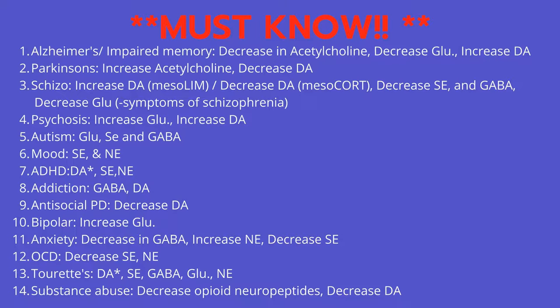Number three: Schizophrenia — increased dopamine in the mesolimbic pathway and decreased dopamine in the mesocortical pathway. Know the difference between these two pathways. There is also a decrease of serotonin and GABA, as well as a decrease of glutamate, which corresponds to negative symptoms.